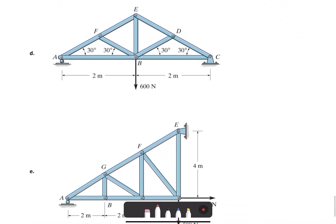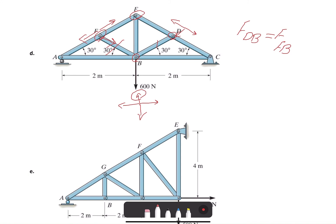In the fourth example, at joint D we have two collinear members so the third member FDB is zero. At joint E, two collinear members make the third member FEB zero as well, and there is no external force. Now that FDB and FEB are zero, looking at joint B: the two collinear members are present along with the third member, but there is also an external load. Because of the external load and reaction forces acting as external loads, we cannot conclude anything further about those members.